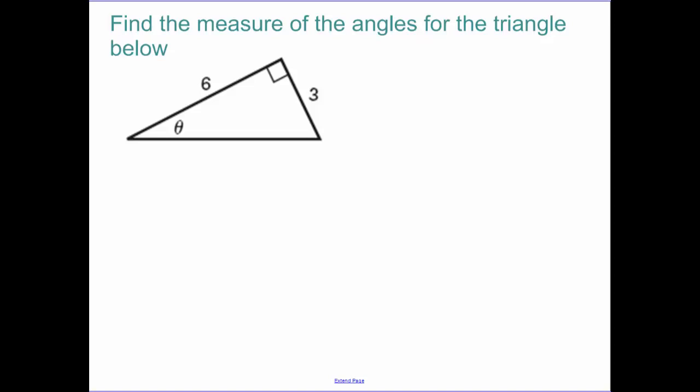So find the measures of the angles for the triangle below. So I need to find this theta. So think about what you're given. You're given opposite over adjacent. So I know that the tangent of theta is opposite over adjacent. So how do we solve for the angle theta? Theta is equal to inverse tangent of 3 over 6.